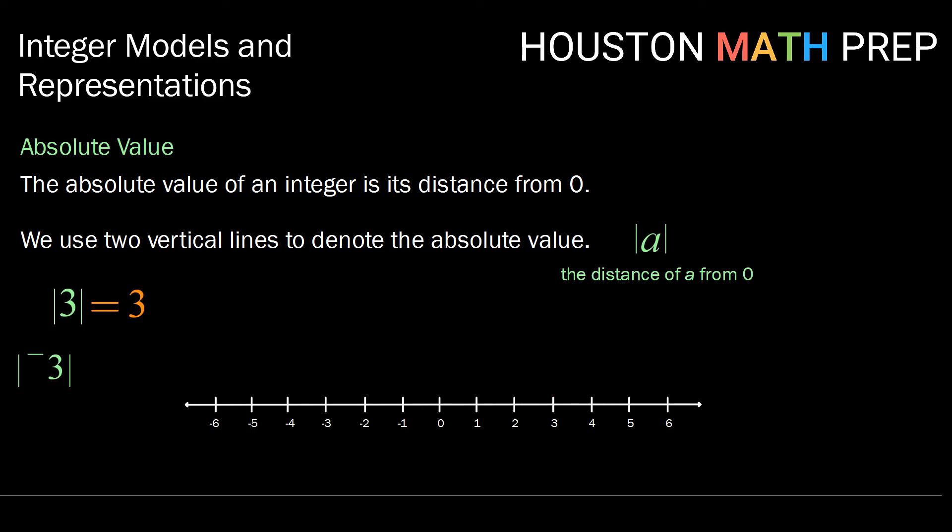Now, if we look at the absolute value of negative 3, we're again counting the distance from zero to negative 3. So that is one, two, three. So the absolute value of negative 3 is also 3, because both are the same distance from zero, one in the right direction and the other in the left.